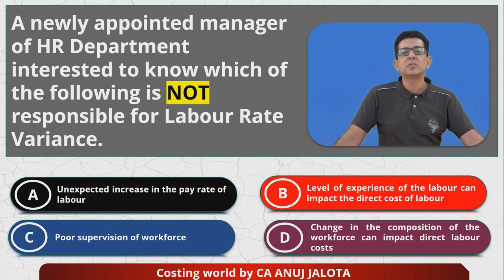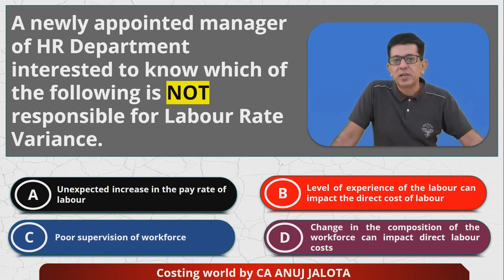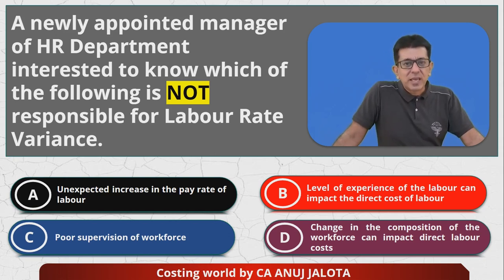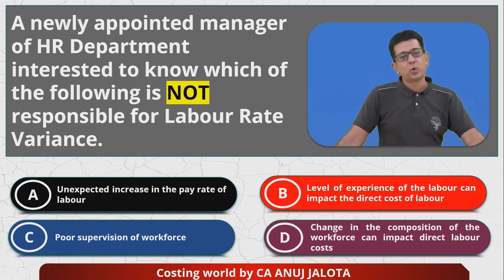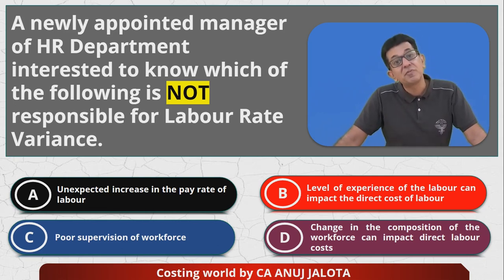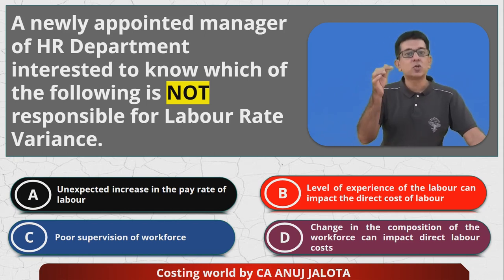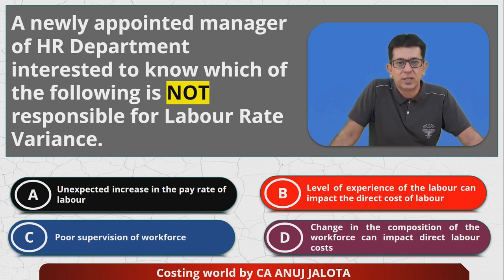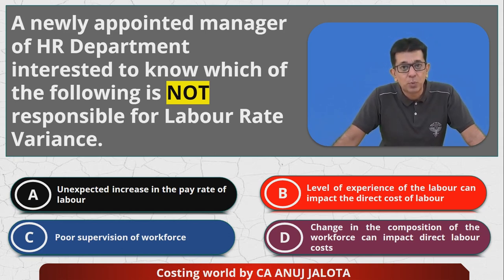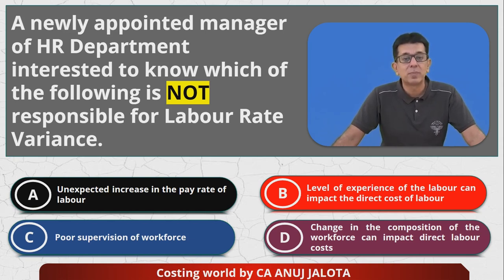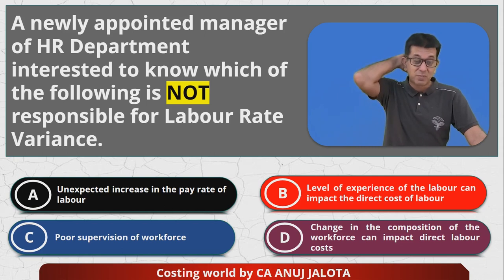Option B: level of experience of labor. They should not have written 'can impact direct labor cost,' but here's what it means — if workers employed initially turn out to have great experience, we'll have to pay them higher rates. So your actual rate will rise and labor rate variance can become adverse. Therefore B can be a reason for labor rate variance.